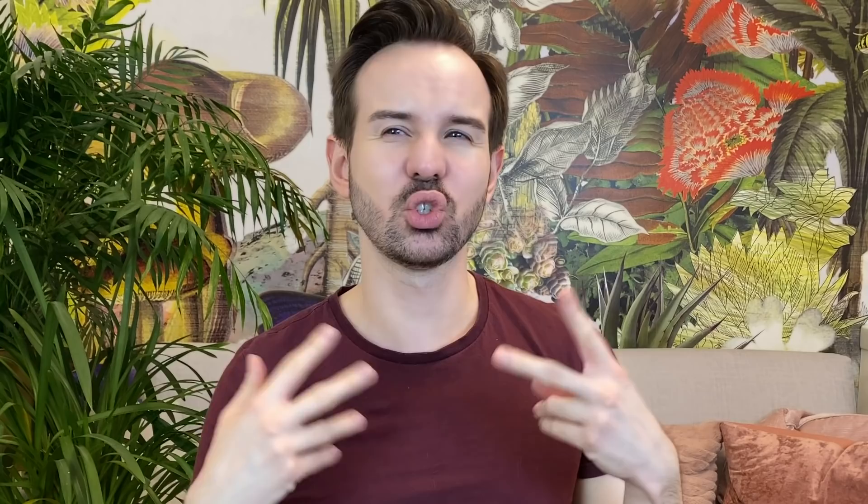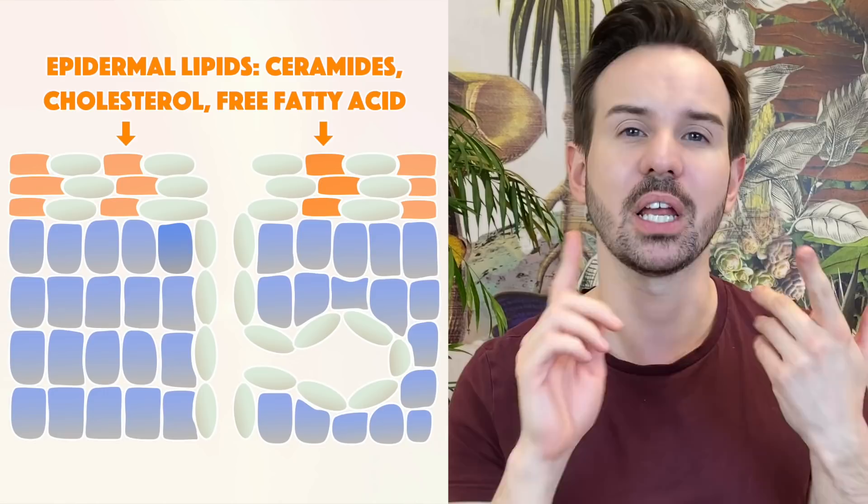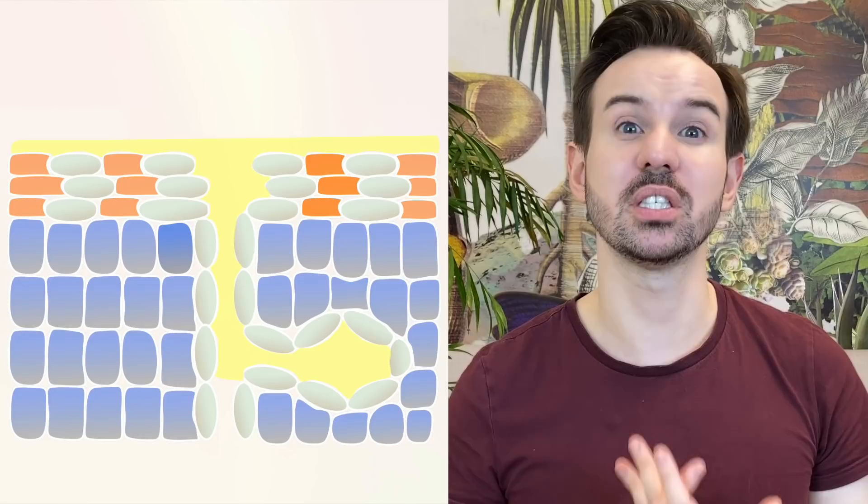In the skin we have, I would say, sort of two families of lipids. We have the ones that are really in the structure of your skin, of your epidermis, of the stratum corneum — aka the skin barrier — like the ceramide, the cholesterol, and the free fatty acids, and those ones are basically in between the dead cells. We have another class of lipids, which are the ones that are produced in the sebaceous glands, aka inside your pores.